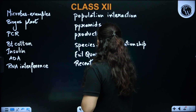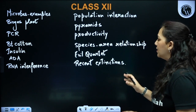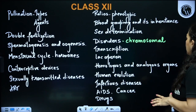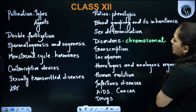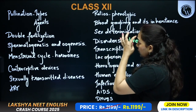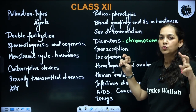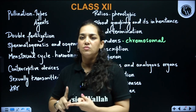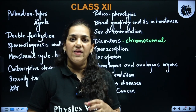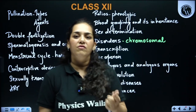Most questions from biodiversity are easy to moderate. In Class 12, the chapter that increases difficulty most is the Genetics and Evolution unit — Principles of Inheritance and Variation and Molecular Basis of Inheritance. Human Health and Disease questions are mostly easy, but Molecular Basis and Principles of Inheritance have a high potential for tough questions.